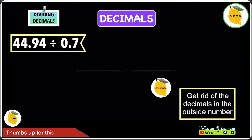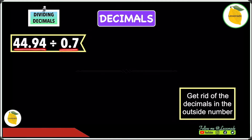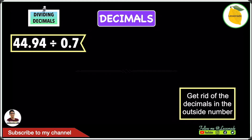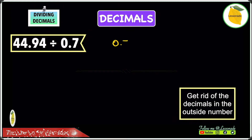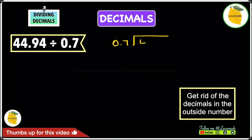Let's have a look at a dividing decimals example. The example is 44.94 divided by 0.7. We're going to start off by dividing these numbers as we would do when dividing any numbers. Write the 0.7 on the outside and on the inside, write 44.94.